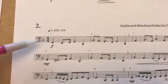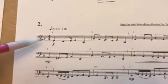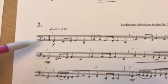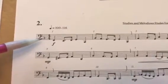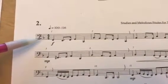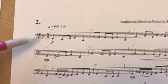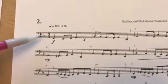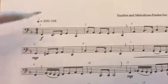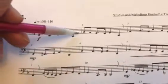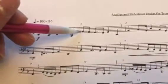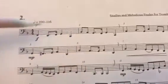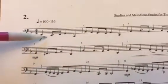If you know the order of the flats, when you have one flat, the first flat is B flat. So the only note that's going to be flat, unless it's marked otherwise, is going to be B. Over here we've got B flat, but that's A natural next to it.